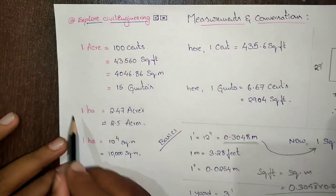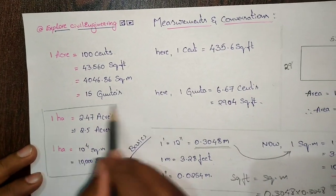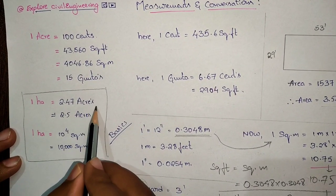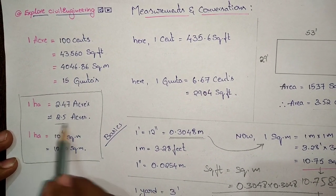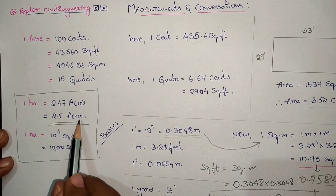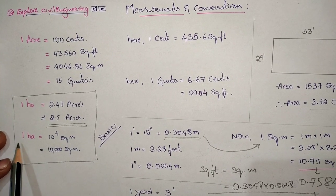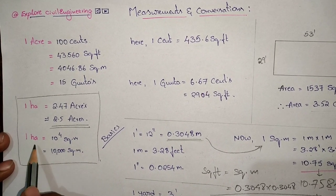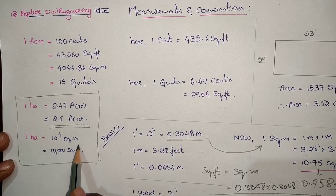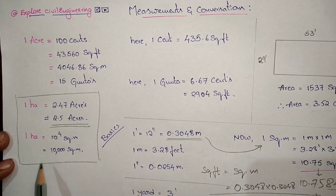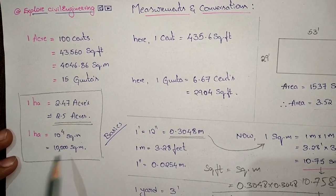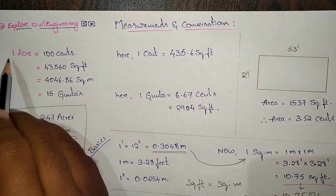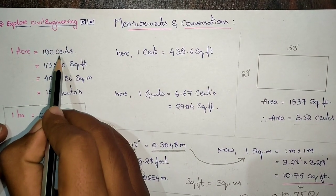One more important topic: hectares to acres and square meters conversion. One hectare equals 2.47 acres, approximately 2.5 acres. Also, one hectare equals 10,000 square meters.